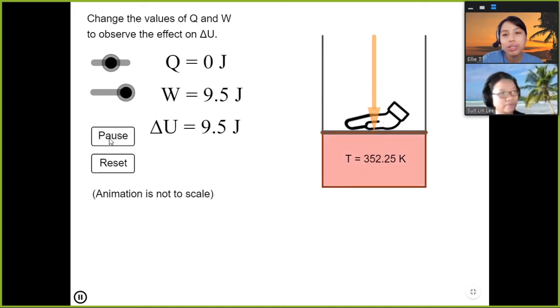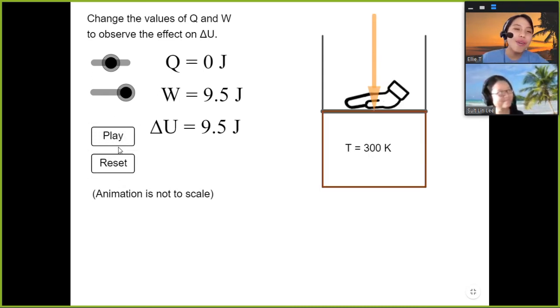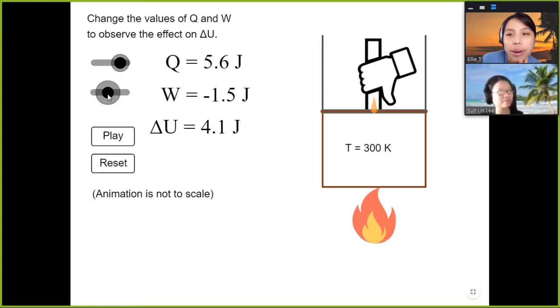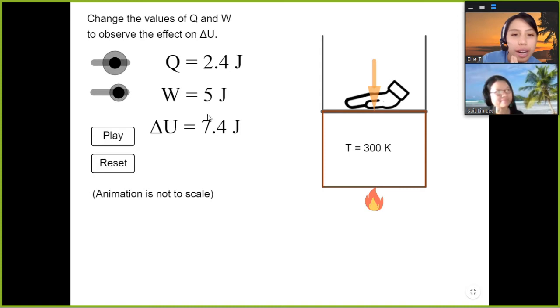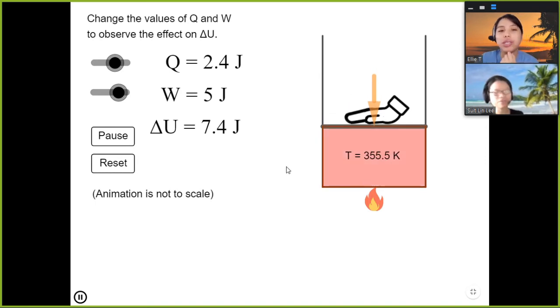Then you can do one more where you add heat and then we also compress. I think we go positive first. So we add heat and we also compress. So you see, 5 plus 2.4 can increase internal energy. So you're adding heat, but you're also compressing. So the temperature will increase. Because the temperature is increasing, your internal energy is increasing.